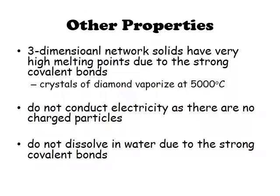Finally, three-dimensional network solids have very high melting points due to the strong covalent bonds between the atoms — for example, crystals of diamond will vaporize at 5000 degrees Celsius. They do not conduct electricity as there are no charged particles, so diamond and silicon dioxide do not conduct electricity, but graphite does due to its delocalized electrons. They also do not dissolve in water due to the strong covalent bonds. Hopefully there's enough information here to answer excellence-level questions in this section.